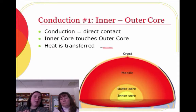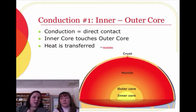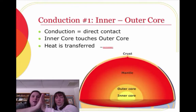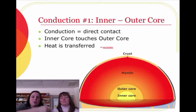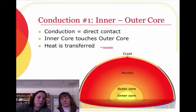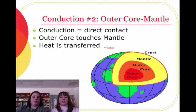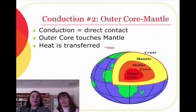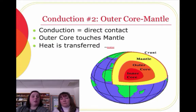Your outer core is the liquid one. That actually makes the whole magnetic field of the Earth. So this is conduction. If I'm the inner core and she's the outer core, I am transferring heat from hot to cold. Conduction is also from the outer core to the mantle — it has direct contact. The outer core touches the mantle and heat is transferred. So you have two conduction points: one from the inner to the outer core, and then one from the outer core to the mantle.